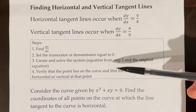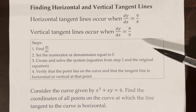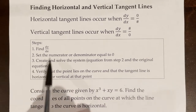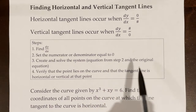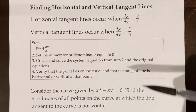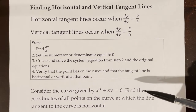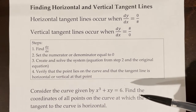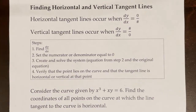Step 3 is to create and solve a system of equations: one equation from step 2, and the other is the original equation. Step 4 is to verify that the point lies on the curve and that the tangent line is horizontal or vertical at that point.